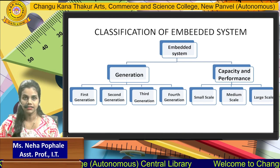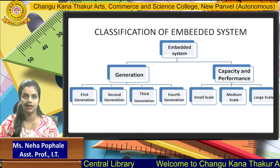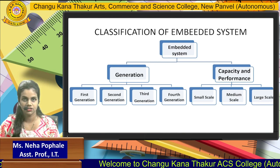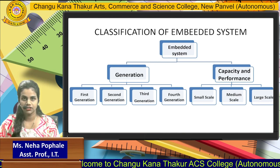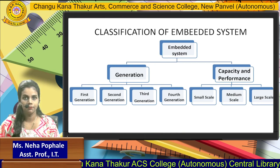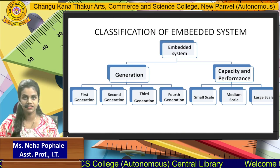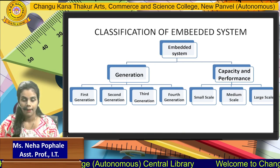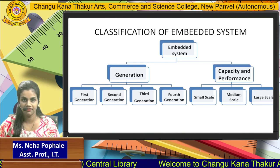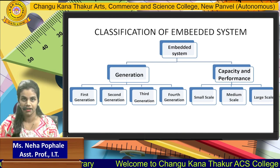In the second generation, the application codes are still written using assembly language. In the third generation, Embedded Systems are developed using microcontrollers of 16-bit to 32-bit, but here the firmwares are written using high-level languages like C++, Python, or Java.